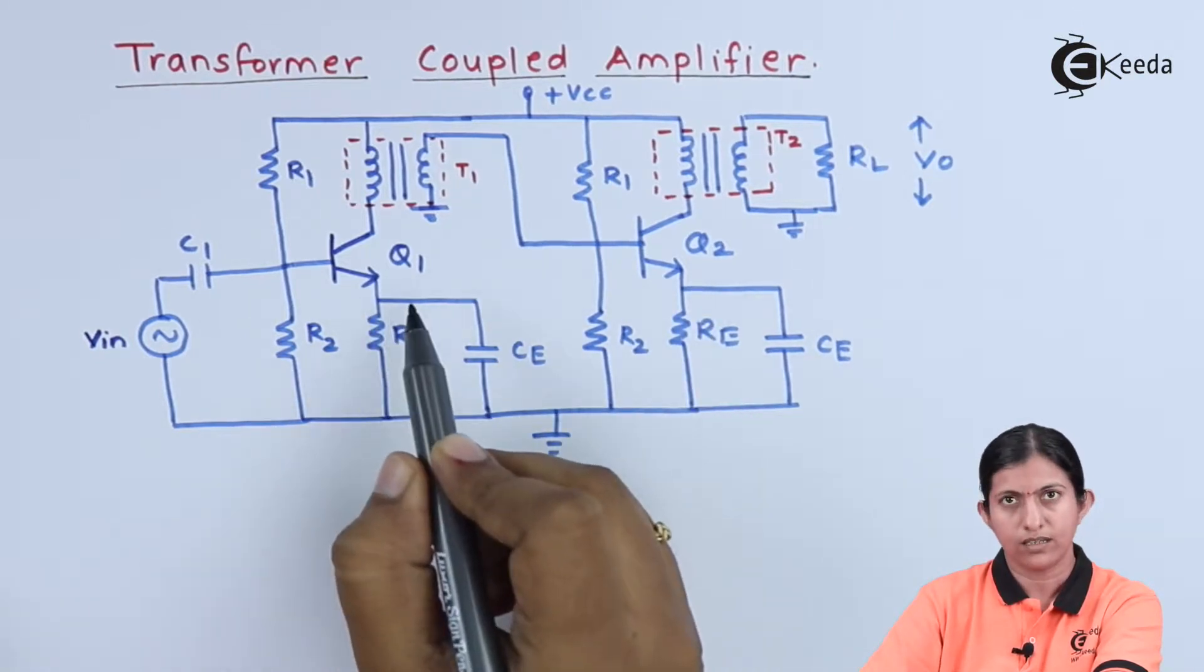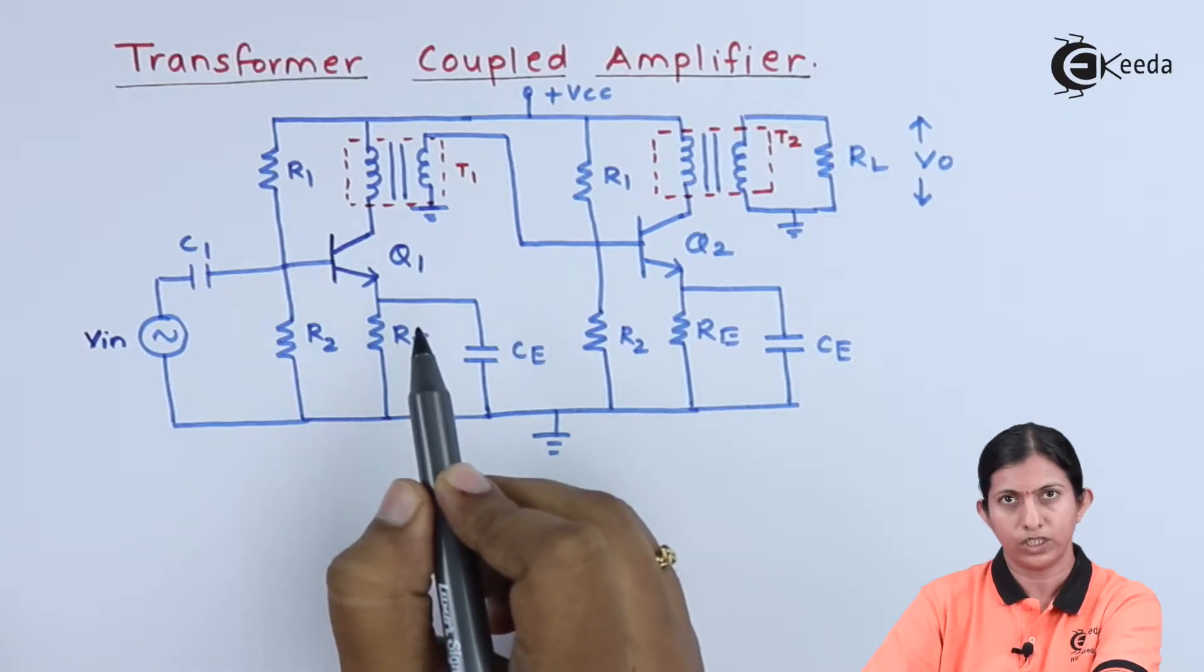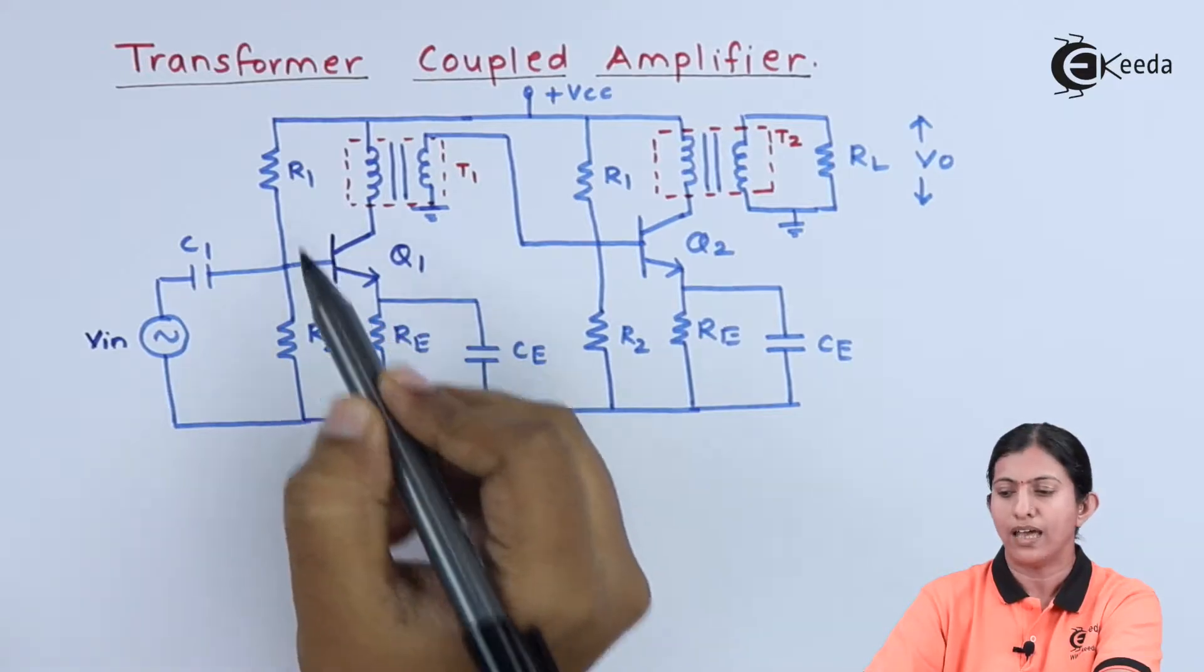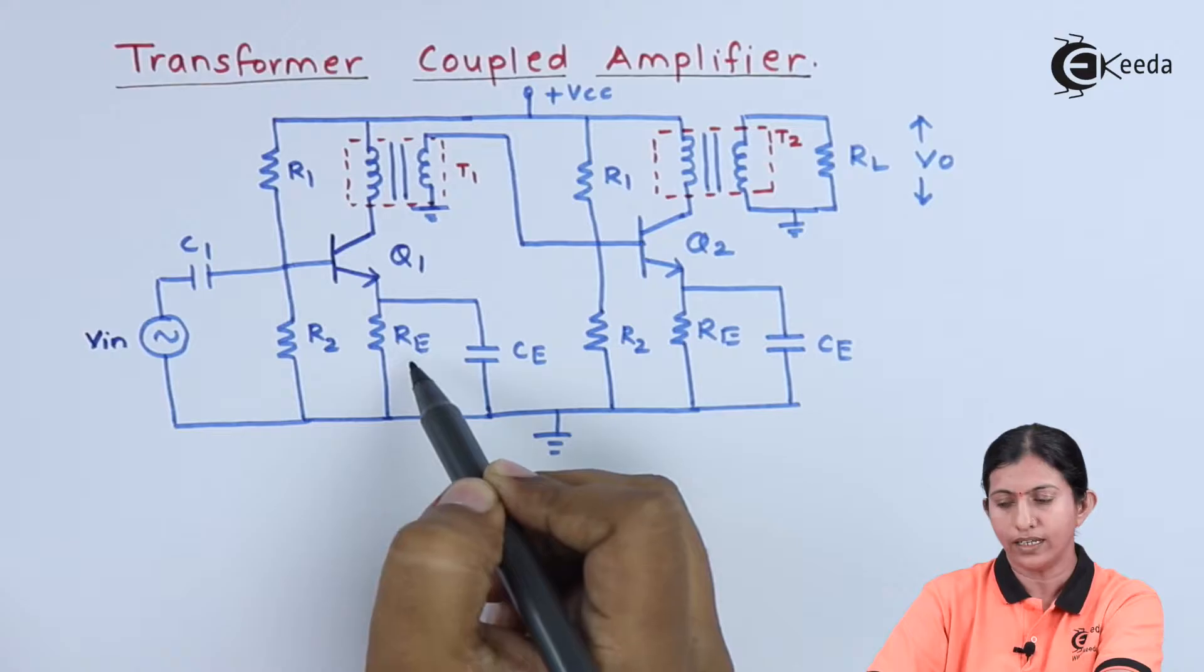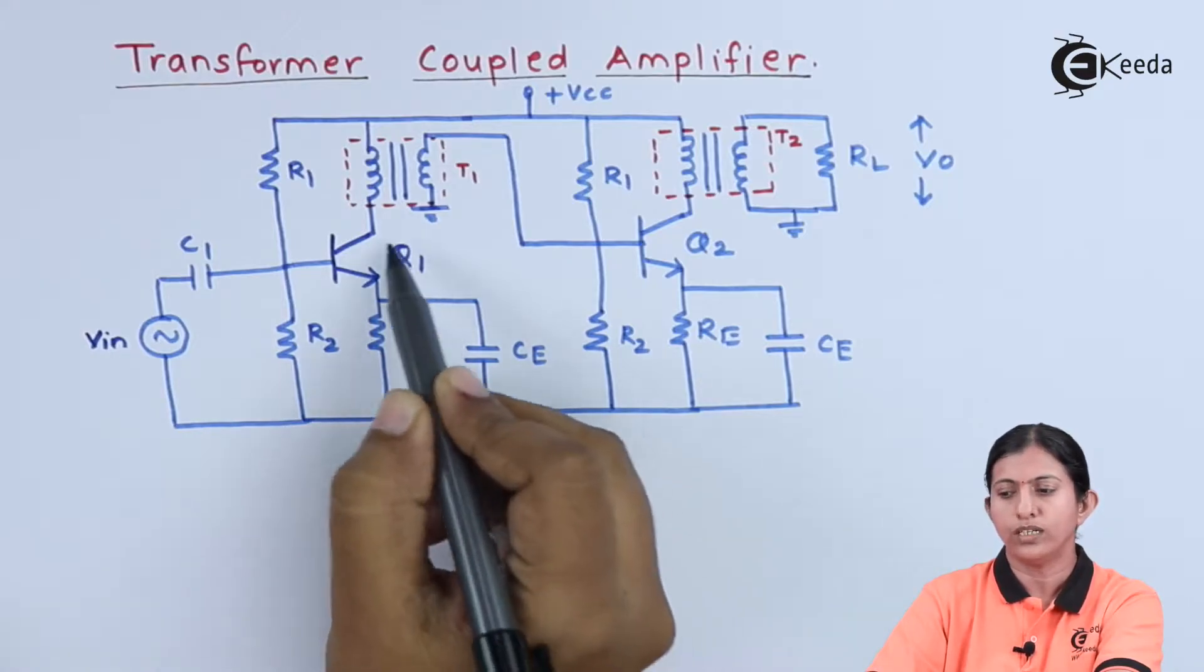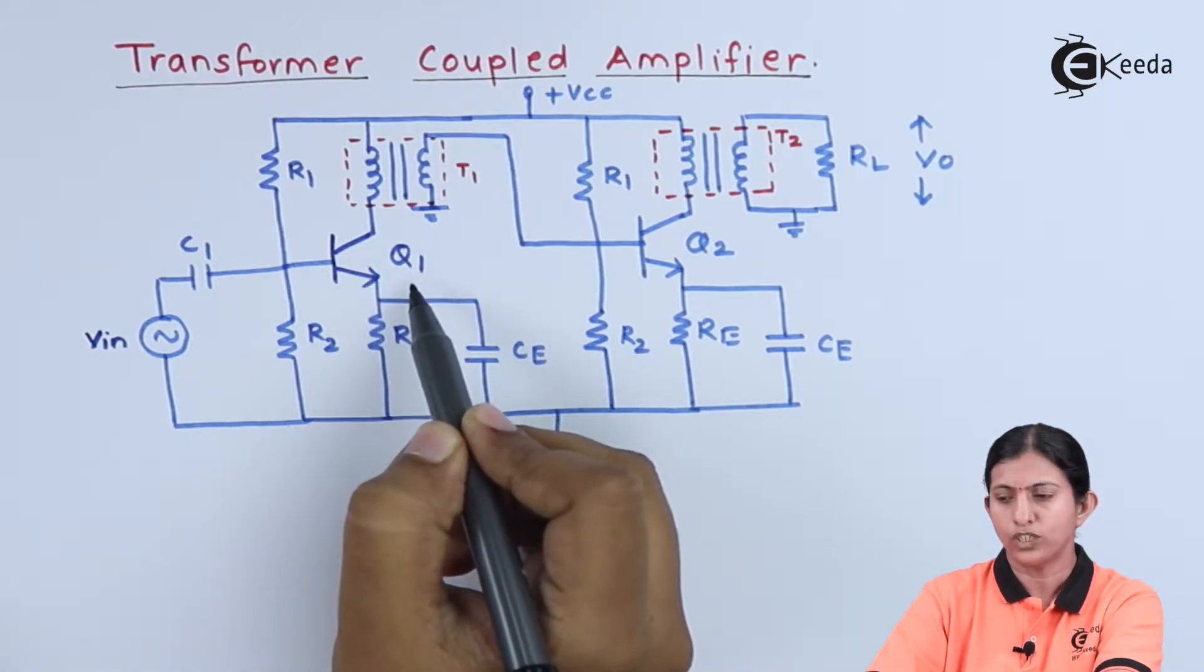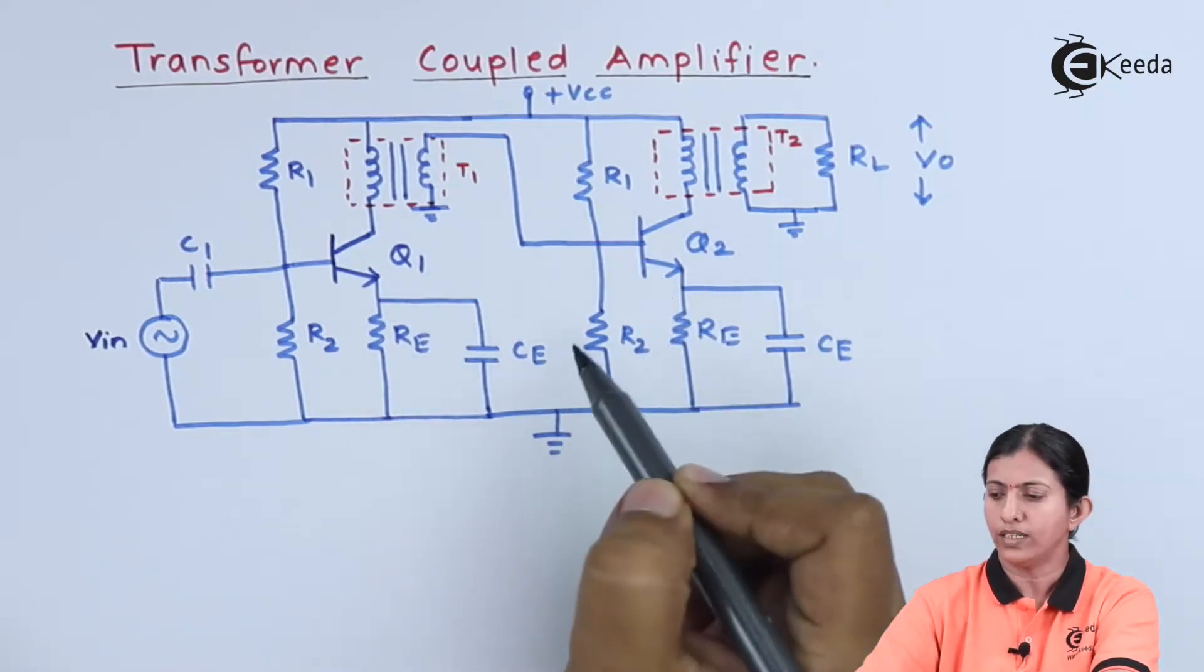For each transistor we are applying voltage divider biasing. R1, R2, and RE are connected to transistor Q1, which forms the voltage divider biasing for Q1.